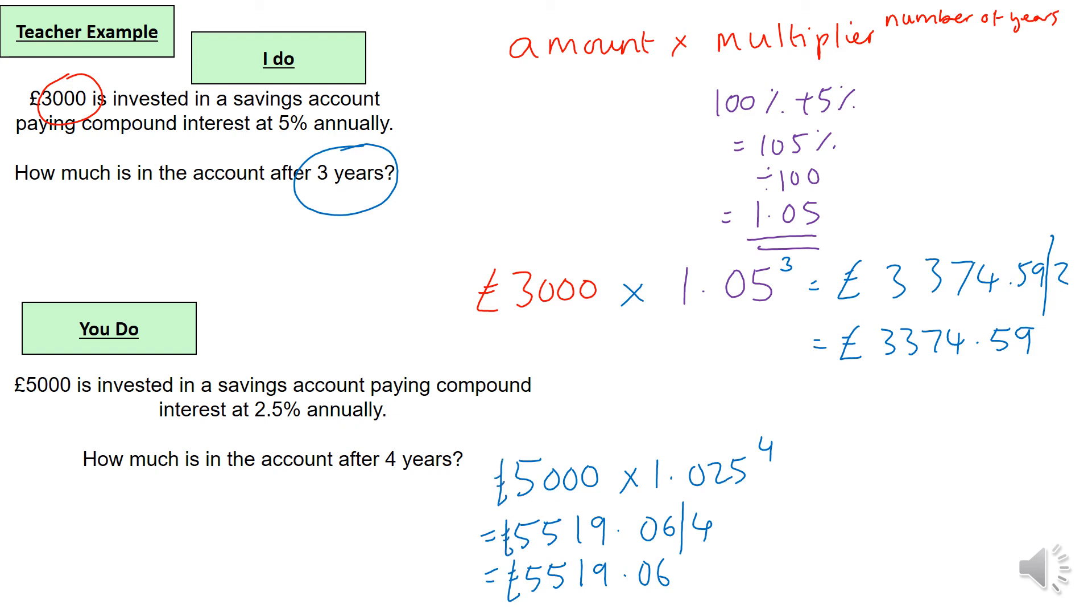If you're not too sure about the multiplier here, how I did that was a hundred percent plus the two point five percent. One hundred two point five percent divide by a hundred, which converts it to a decimal, and that's how you would have got the multiplier of one point zero two five.